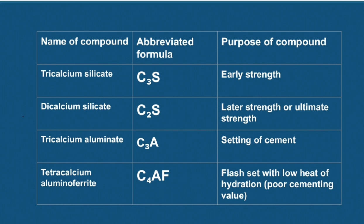Let us talk about alite. Alite is nothing but tricalcium silicate. Its abbreviated formula is C3S. Three CaO and one SiO2 compounds mix together to form C3S, called tricalcium silicate. It is responsible for early strength of cement.